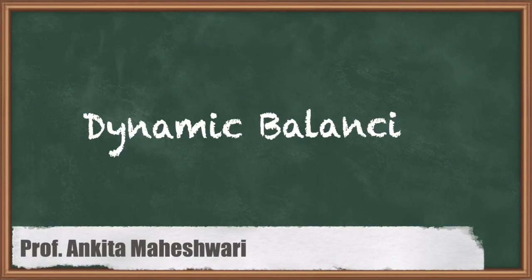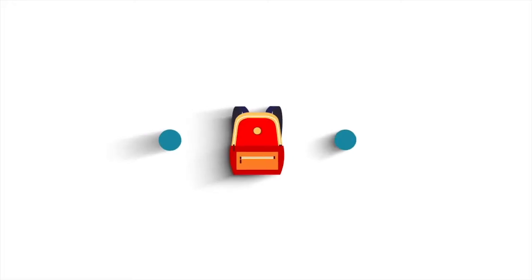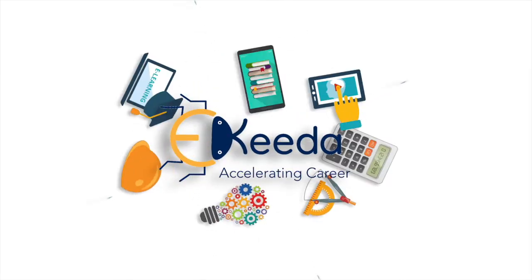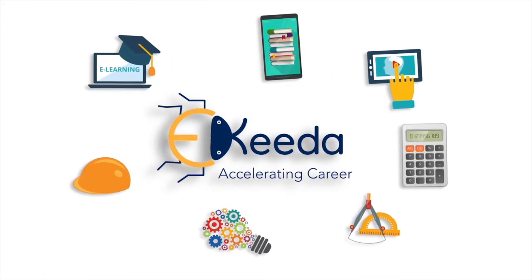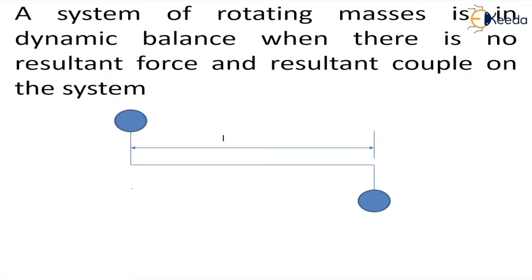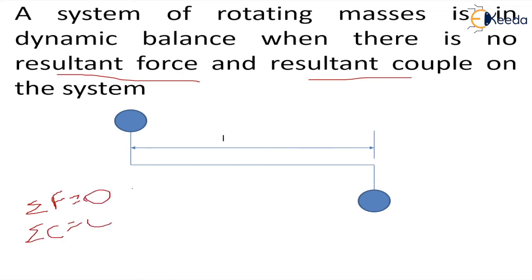Hello everyone. In this video we'll discuss dynamic balance. A system of rotating masses is in dynamic balance whenever there is no resultant force and no resultant couple on the body. That means summation of forces is equal to zero and summation of couples is also equal to zero.